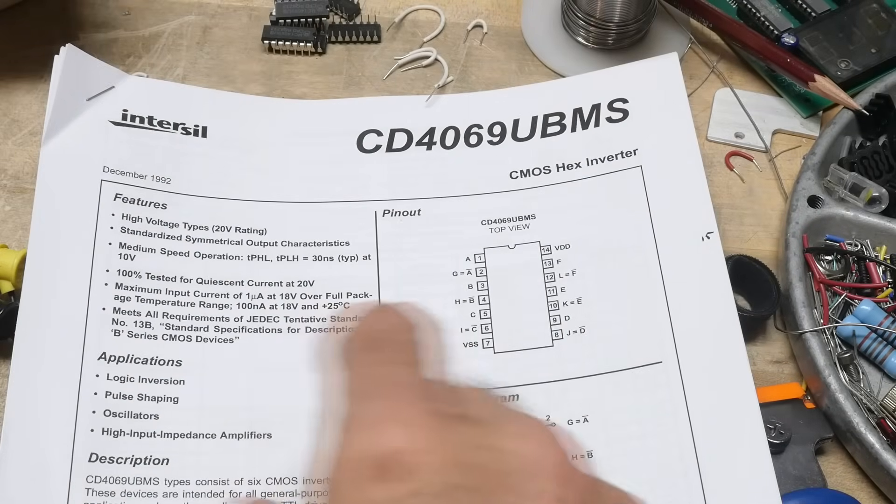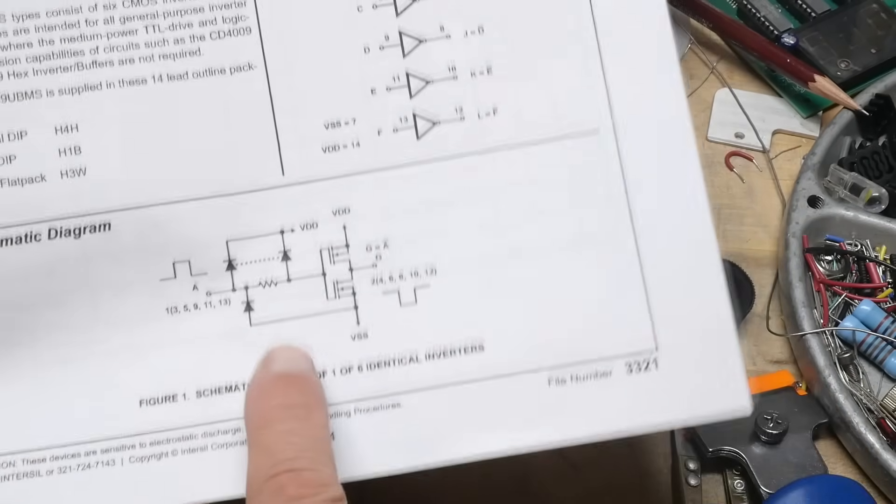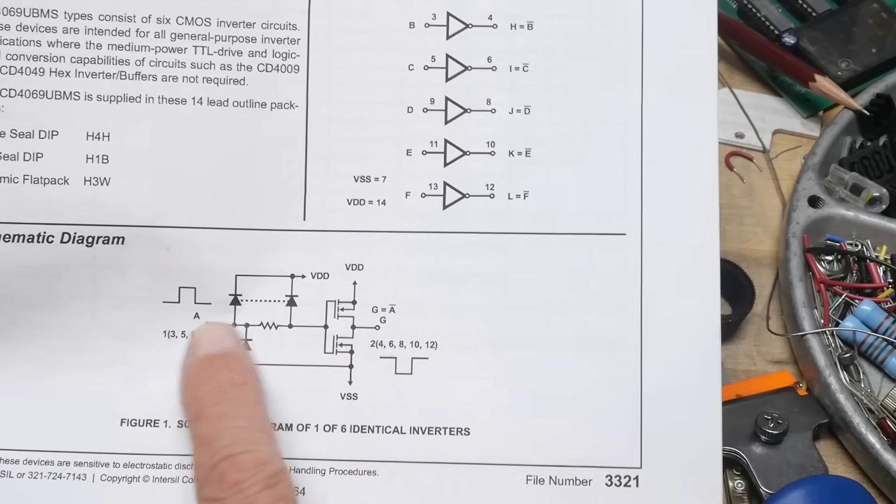Alright, continuing on with the 4069. Probably getting bored of this part, but we have this interesting unbuffer device which means it's sort of like a class B amplifier, right?